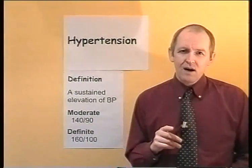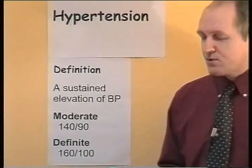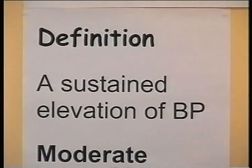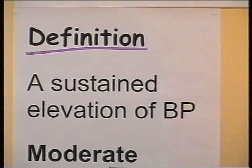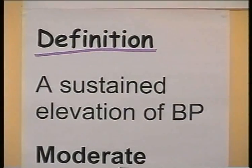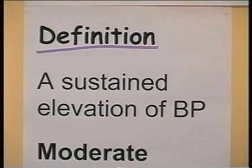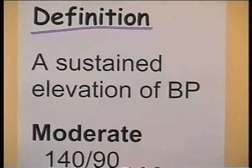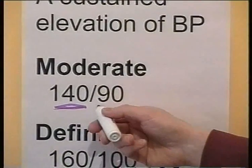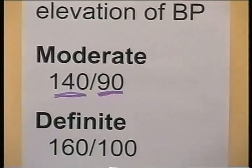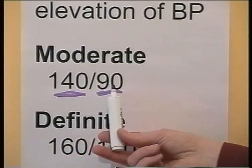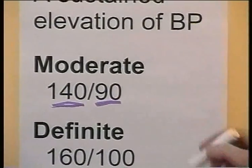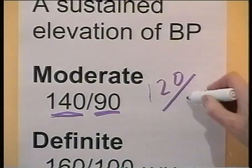We've said it's high blood pressure, but how high is high? Everyone agrees hypertension means high blood pressure, but how high is high - how are we going to define it? Well, if you take a youngish adult, a moderate degree of hypertension would be a systolic blood pressure of 140 with a diastolic blood pressure of 90. A normal would be something like 120 over 80.